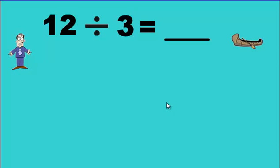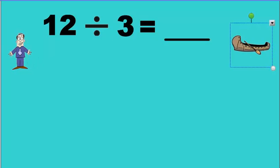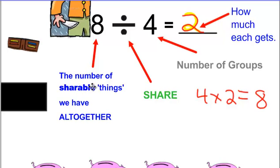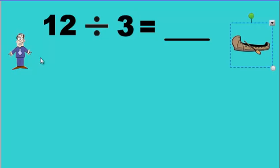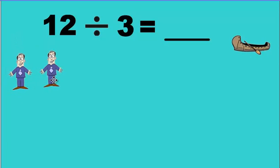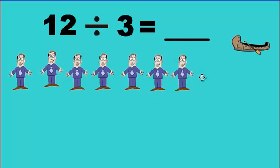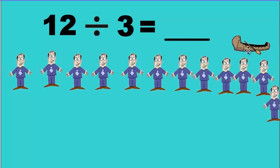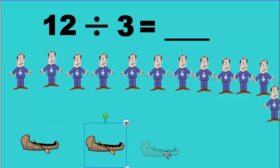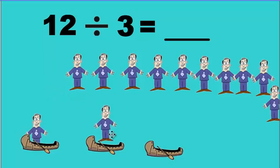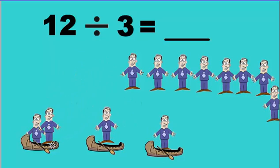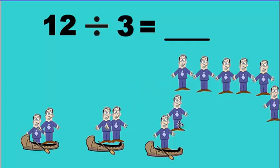We have 12 divided by 3. Do we need twelve boats or twelve people? What are we going to be sharing? We don't split boats up — actually, we share people because we need twelve people. We have 4, 5, 6, 7, 8, 9, 10, 11, 12 people. We're going to need only three boats because the divisor is 3. We take the people and share them among the boats.